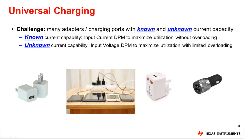Which one to use depends on whether or not the current capability of the attached adapter can be determined. There are many different types of power adapter. For some types, such as USB and USB PD, the maximum current capability of the adapter is known because it's either defined by the standard or communicated via a standardized mechanism. In cases such as this, input current DPM may be used to limit the input current drawn by the battery charger to ensure that it remains at or below what the adapter is capable of supplying.